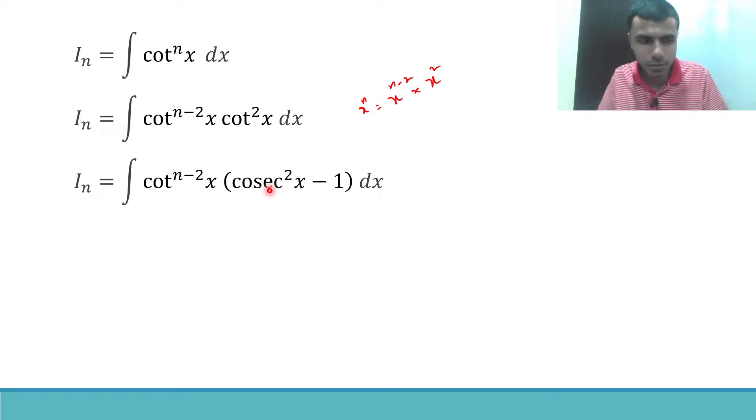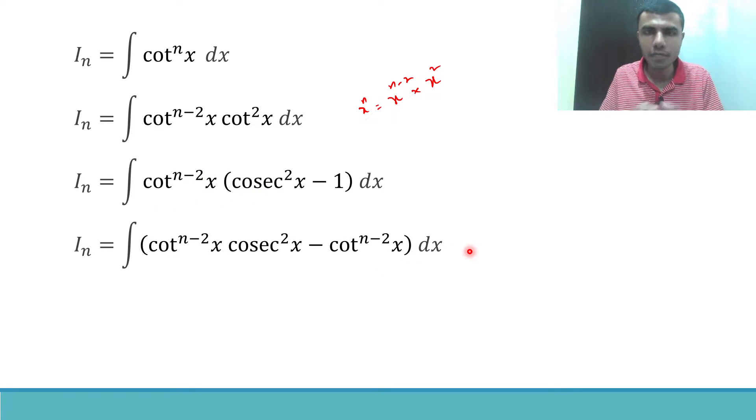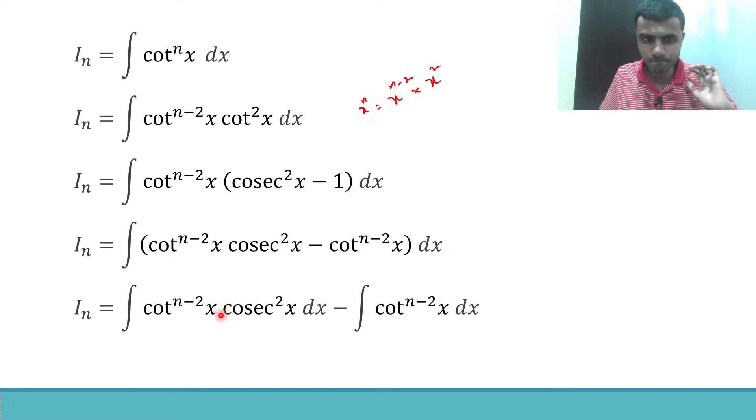Now just multiply cot power n minus 2 x into cosecant square x minus cot power n minus 2 x dx. These two are connected by minus in between, so the integral will go to both. I am integrating them separately. I get integral cot power n minus 2 x into cosecant square x dx minus integral cot power n minus 2 x dx. One thing to note here is if I took cot power n, integral cot power n x dx as I_n, and here I have integral cot power n minus 2 x dx, this will be nothing but I_(n-2).